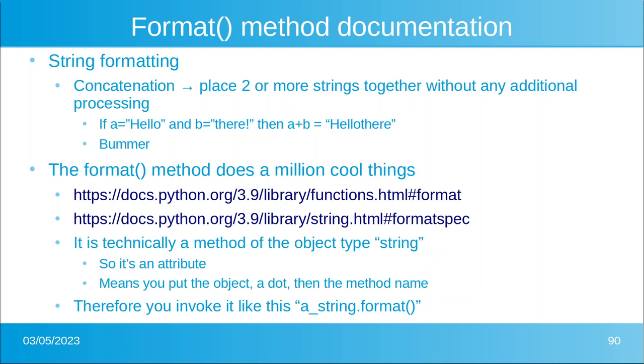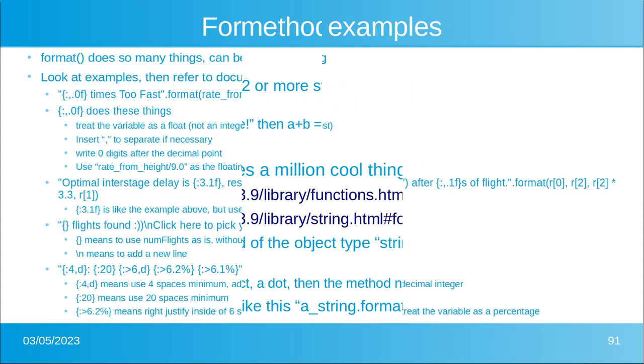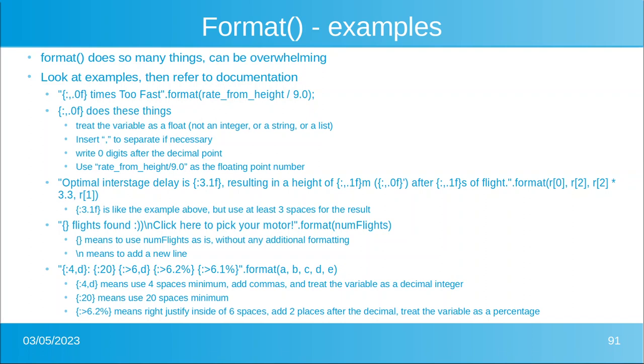these two links will give you a lot more information. Technically it's a method of string, which is an object, which makes it an attribute. And because it's an attribute, it means you put the object then a dot then the method name. So if you had a string called a_string, in order to invoke it you would put a_string.format.